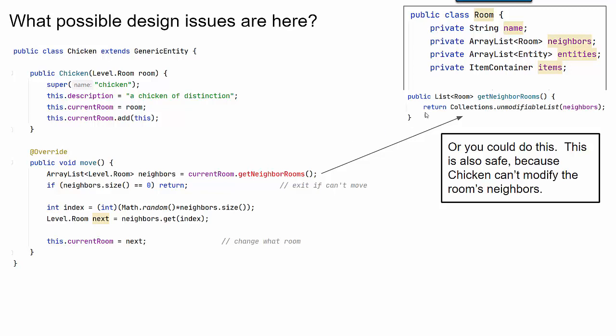What's bad is if room returns a reference to its internal list. And that would be bad because, in this case, for example, chicken would then be able to modify the neighbors of its own room. And I don't want to give chicken that power. Room needs to protect who's able to change its neighbors.